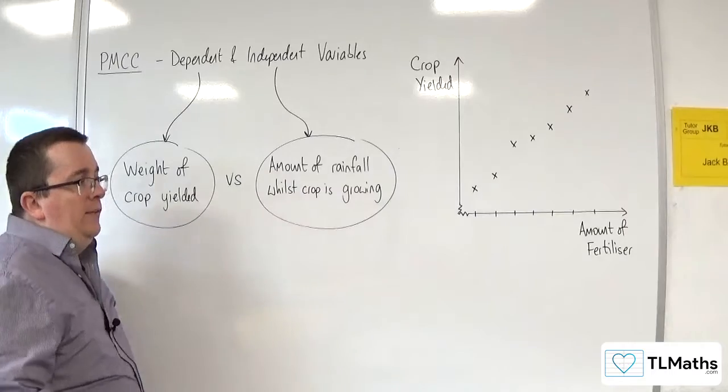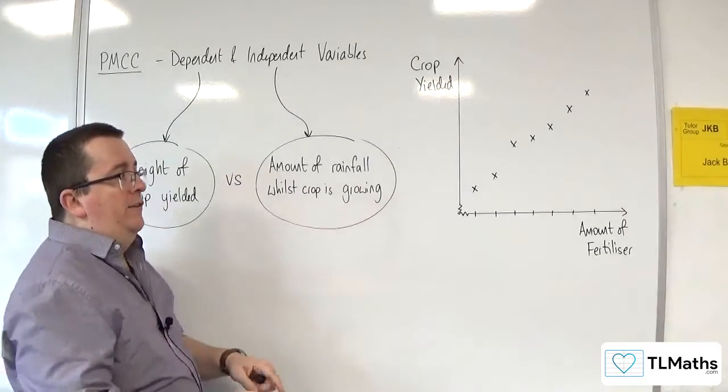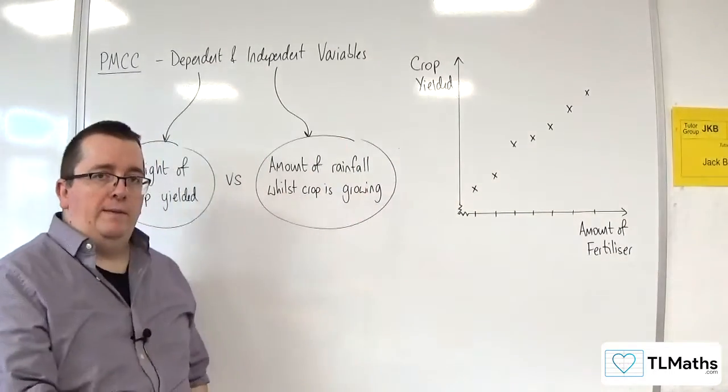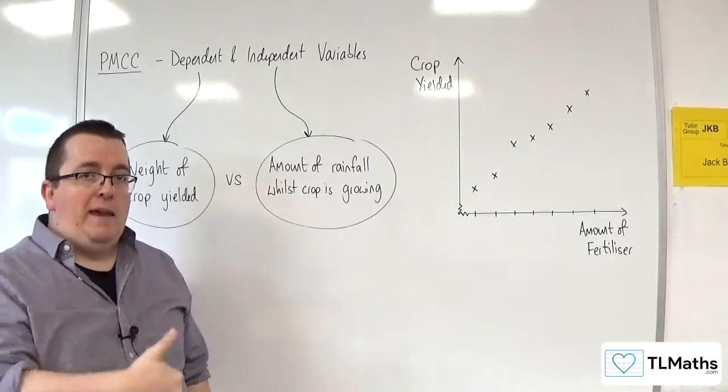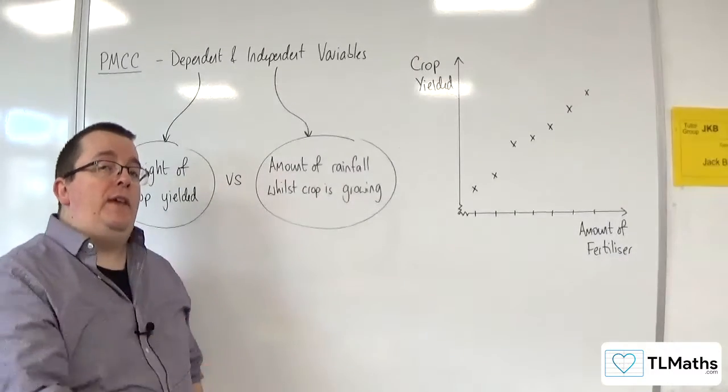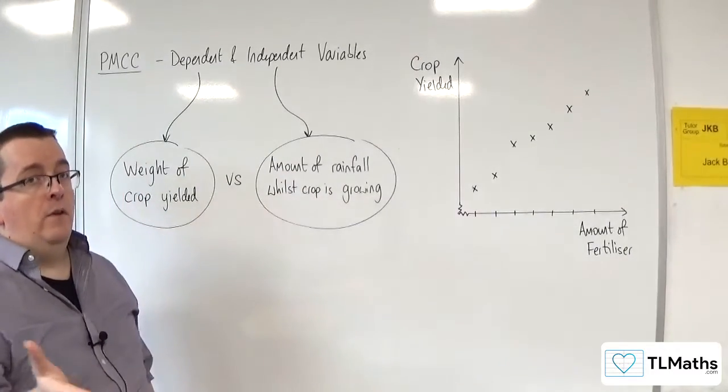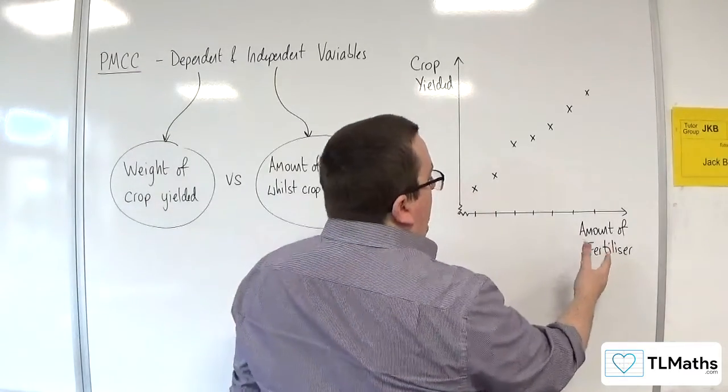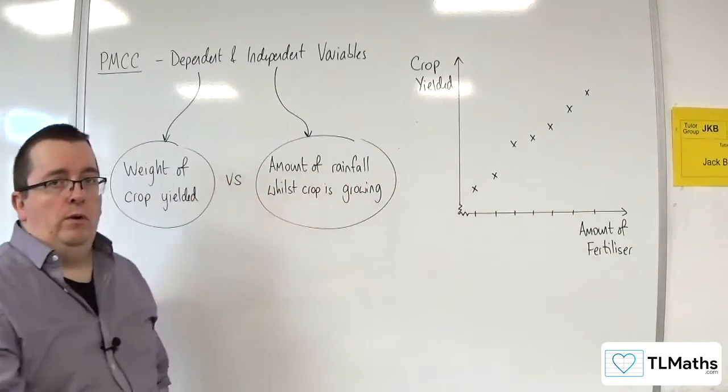Now, in this case, the amount of fertilizer I've kind of identified by the fact that I am controlling how much is being used so I can see what effect it will have upon the crop. So the amount of fertilizer here would be considered a control variable.